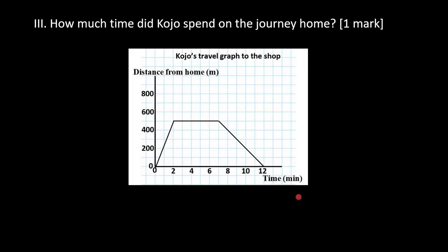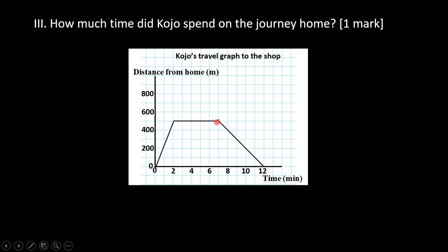Now let's tackle the third question: how much time did Kojo spend on the journey home? A return journey normally has a negative gradient — it slopes downwards, meaning it has a negative slope. This was his point of return, and when you trace down, we are going to be reading from the 7th minute to the 12th minute.